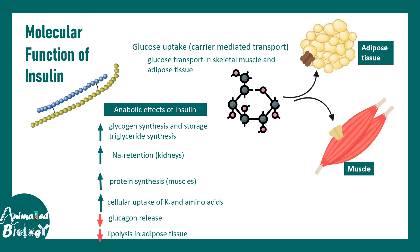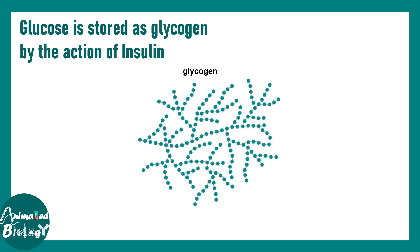Insulin also leads to decreased glucagon release and decreased lipolysis. Glucagon release would lead to increased glucose levels, but the job of insulin is to reduce glucose from the blood and channel it to the tissues that need it, polymerizing biomolecules to store them in a storable format. So insulin is a master regulator of anabolism.